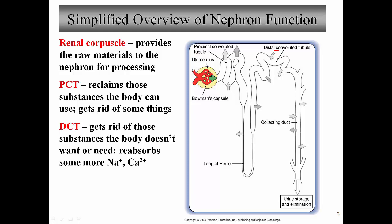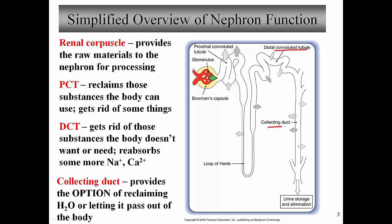The distal convoluted tubule also carries out some reabsorption, but its main function is secretion. Finally, the collecting duct — which is not part of the individual nephron — receives input from multiple nephrons. What happens in the collecting duct is it provides us with the option of reclaiming water or letting it pass out of the body. In other words, the collecting duct controls the final volume and solute concentration of the urine.